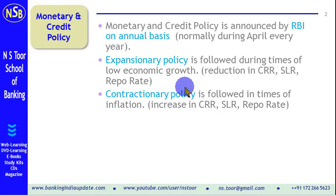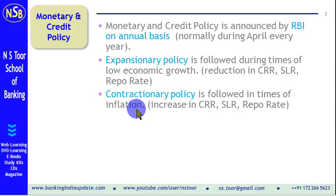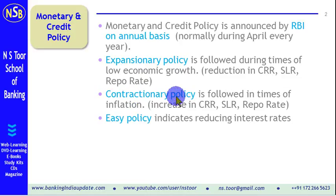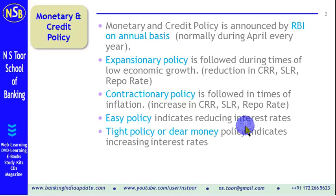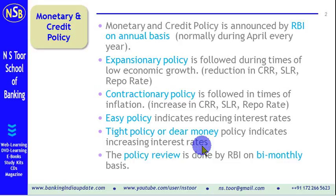In the contractionary policy, RBI increases the CRR, SLR, and repo rate. So in times of low economic growth, expansionary policy is followed, and in times of inflation, contractionary policy is followed. The expansionary policy can also be called easy policy, which indicates reducing interest rates and reducing CRR. The contractionary policy can also be called tight policy or dear policy, where interest rates are increased by Reserve Bank of India. This policy review is done by RBI on a bi-monthly basis.